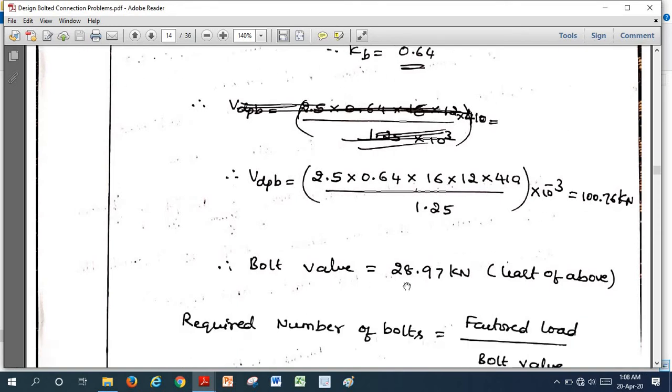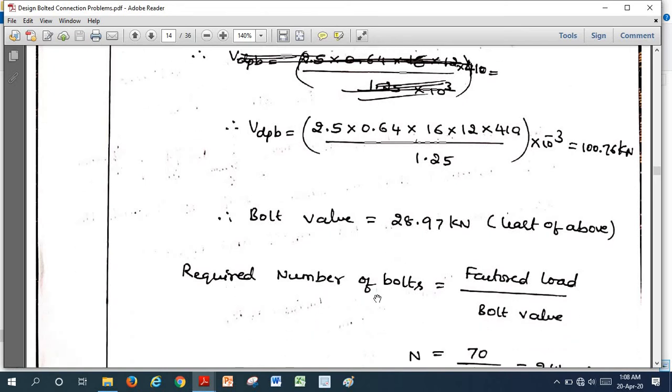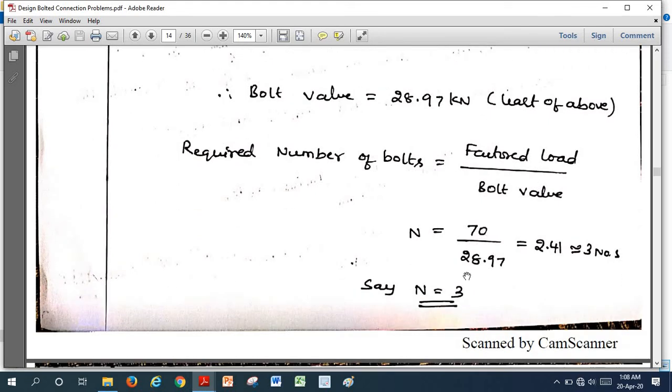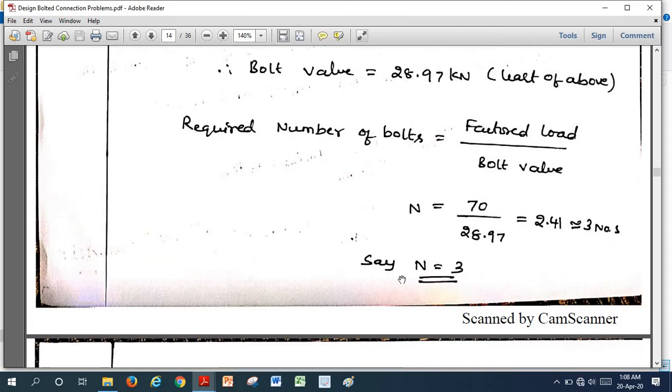Here the bolt value is the least, 28.97 is the least value, that is shear strength. Number of bolts required to make the connection, we need to calculate to design the joint. That is equal to factored load divided by bolt value. N equals 70 divided by 28.97, which comes to 2.41. We need to provide the nearest whole number, three bolts, N equals 3.